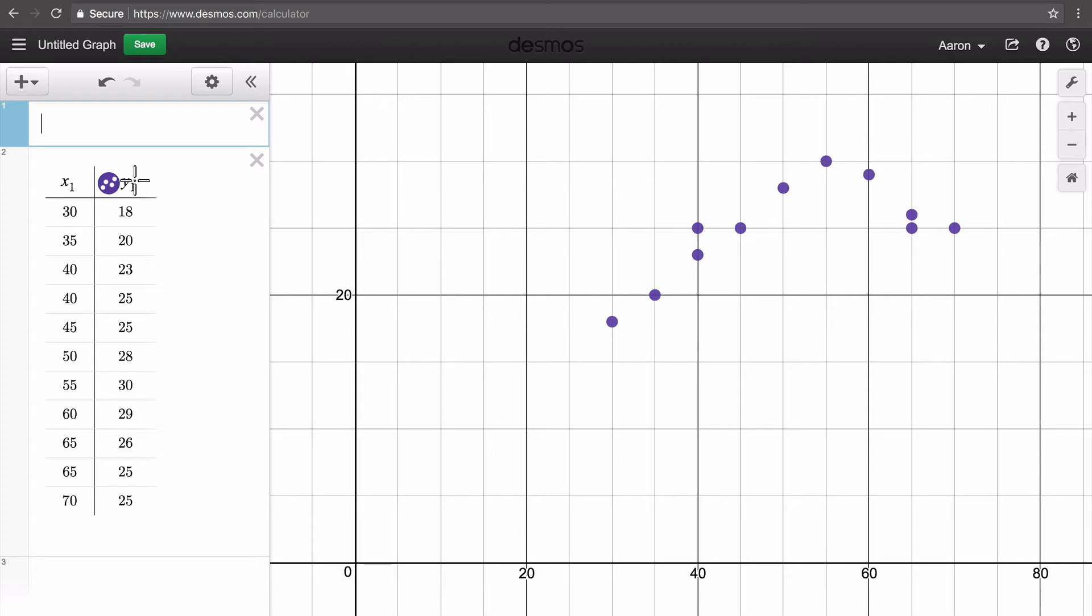Just like when we did the linear regression, we're going to be referencing the data from this table. So anytime we talk about a y or an x, we need to make sure we use the subscript y sub 1 and x sub 1.